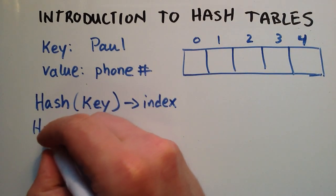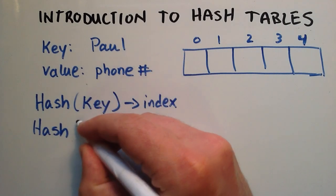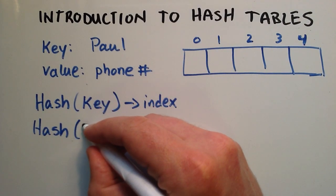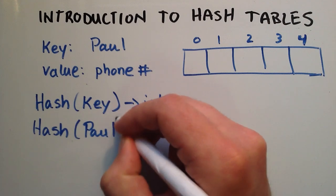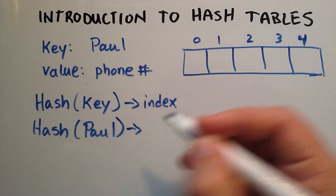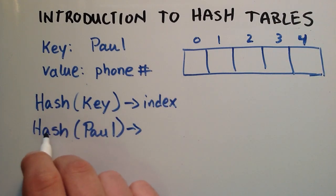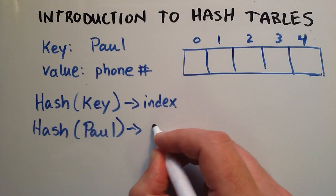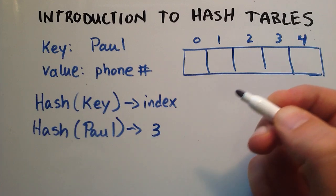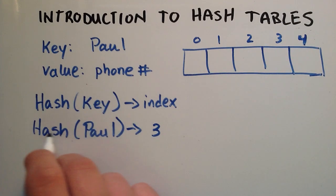For example, we could do hash, and then as the argument, we could enter my name. My name could be the key. And then we could just say that our hash function evaluated this key and said, okay, that should go in index 3. The way the hash function is written is that every time you enter that key, if it's the same key, it's going to spit out the same index number. So every time I enter Paul into my hash function, I should get the index number of 3.